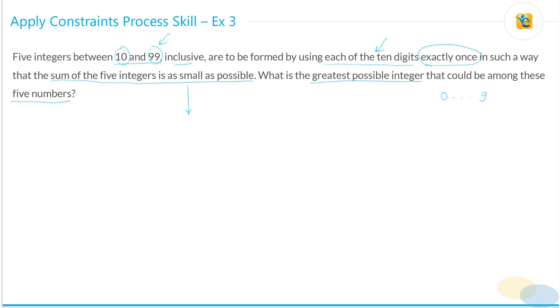One is that each of the 10 digits can be used exactly once. So this is constraint number one. And constraint number two is that the sum of five integers needs to be as small as possible. What can you infer from this?